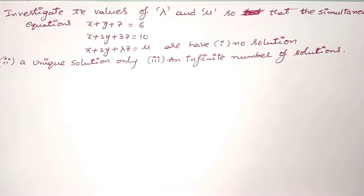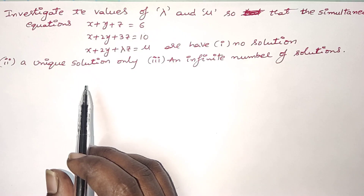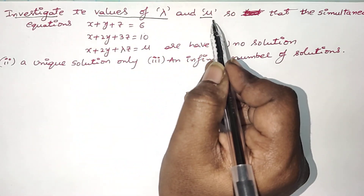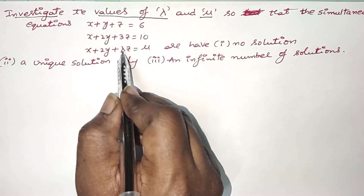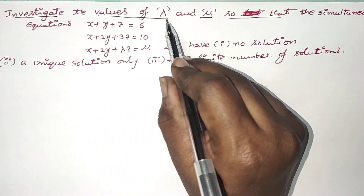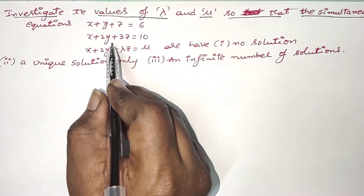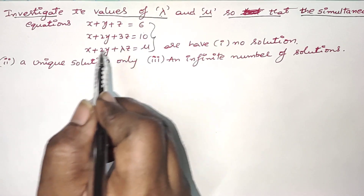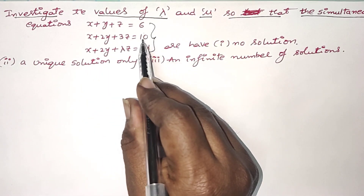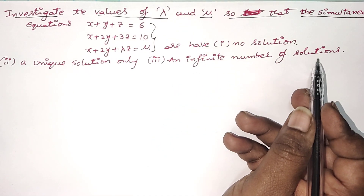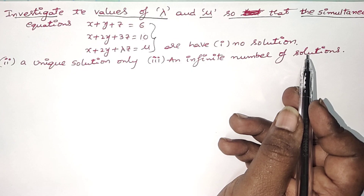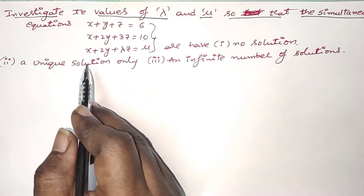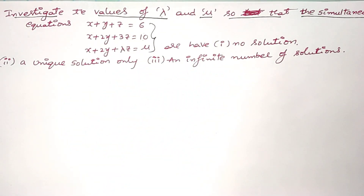Hi everyone, welcome back to our channel. This is another example on solving a system of non-homogeneous equations. We have to investigate the values of lambda and mu — unknowns involved in the given system — so that the simultaneous equations have no solution, a unique solution, and an infinite number of solutions.